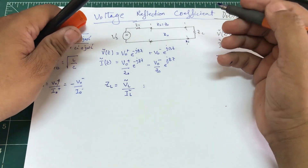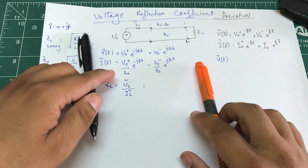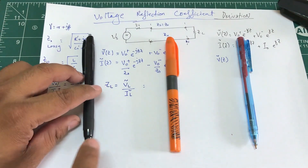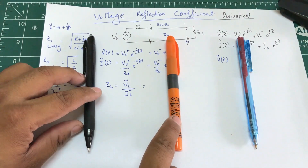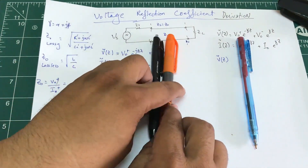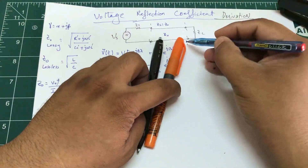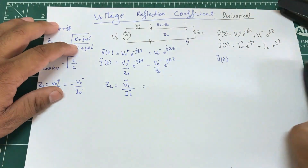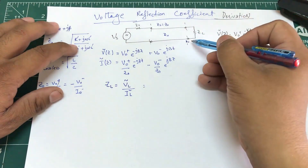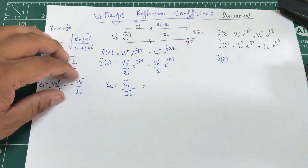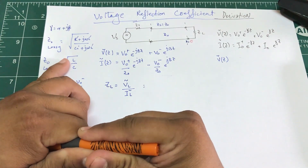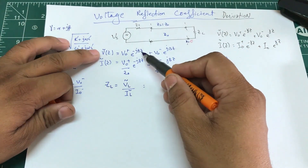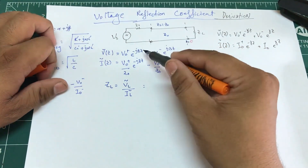I'm going to evaluate this at the point where the load is connected. We calculate ZL as the ratio of v(z) to i(z) evaluated at some particular length. Since the line is lossless and ZS = Z0, the line has no effect — it's as if the load is directly connected. So the value of z at the load is zero.